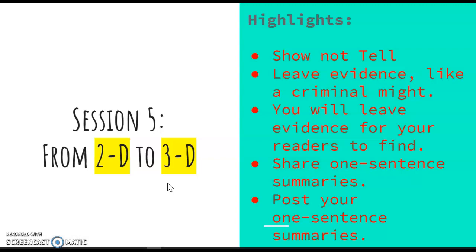A few of the ways that we're going to do this are through things such as showing details versus telling details. We're going to talk about how you can leave evidence like a criminal might so that our readers can find these little clues, these little details, these little pieces of evidence and put them together so that they could see your story in a 3D perspective versus 2D. We're also going to share our one sentence summaries about our plot and post our one sentence summaries so that our writing group partners can help give us ideas about how we might be able to revise our stories and make them more 3D.